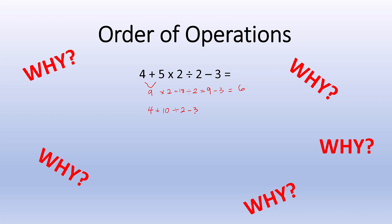So 4 plus 10 equals 14. 14 divided by 2 gives me 7, and then 7 minus 3 would give me 4.